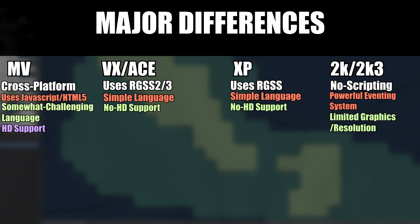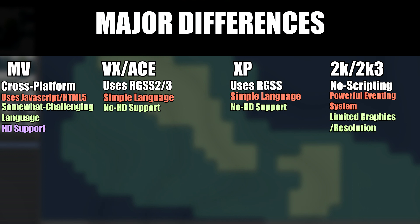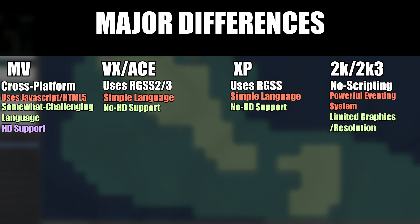The limitations of RPG Maker 2003 are that the screen resolution is 320x240, so the sprites look very pixely — which personally doesn't bother me — and the graphics have to be 16-bit, so they have to be indexed with a 16-bit color palette. Otherwise you won't be able to use the graphics, as the engine only knows how to render 16-bit graphics. But do not let that scare you away. RPG Maker 2003 is one that I have the most fun using, simply because of its limitations, because it really challenges your creative skill and its powerful eventing system.